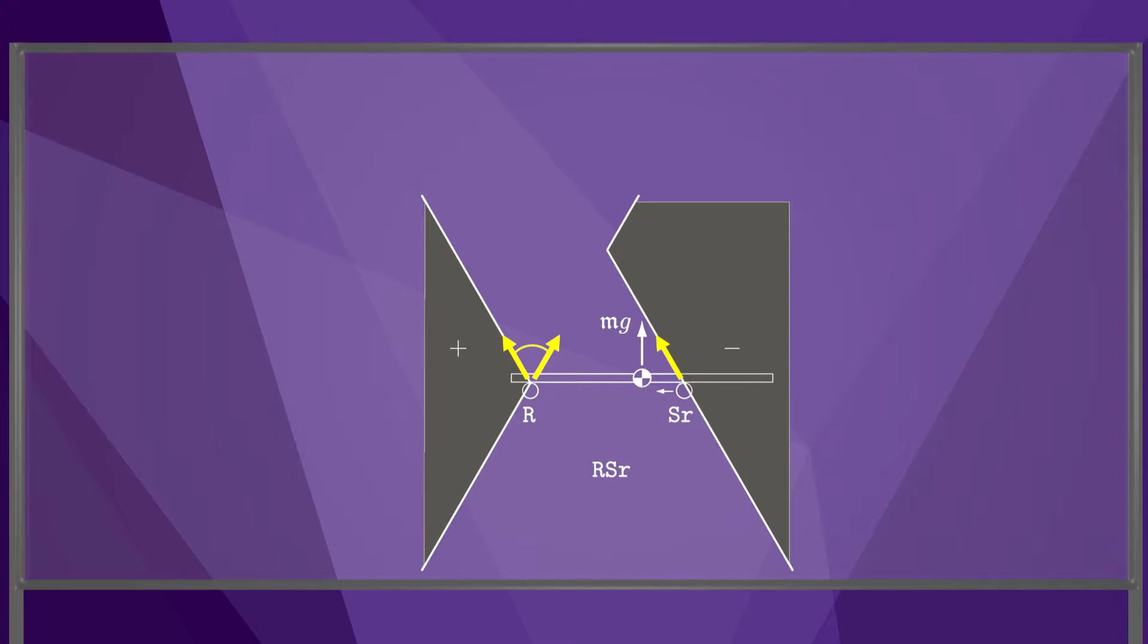Now assume that there is no sliding at the left finger, but the right finger slides. Then the left finger can apply any force in its friction cone, while the right finger can only apply forces on the left edge of its cone, as dictated by Coulomb's law.